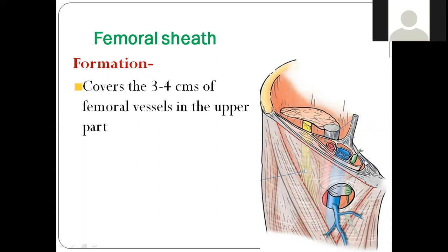How is the floor formed? The mnemonic IPPA is good — iliacus, psoas major, pectineus, and adductor longus. Very good. Iliacus, psoas major, pectineus, and adductor longus form the floor. Contents are vein, artery, and nerve.